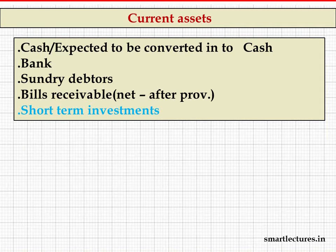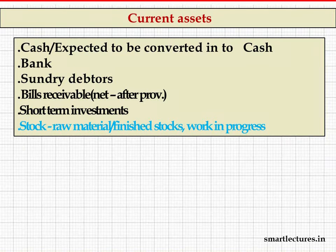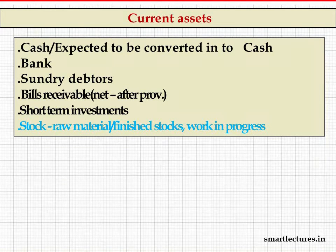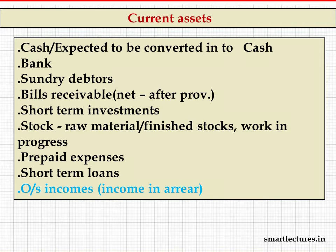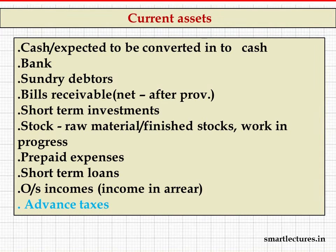Stock — whether raw material, finished goods, or work in progress (semi-finished) — are all current assets because stock is expected to be sold and converted into cash within one year. Prepaid expenses are also current assets. Short-term loans given to others will be recovered within one year and treated as current assets. Outstanding income — earned but not yet received — and advance tax paid to the government are also treated as current assets.